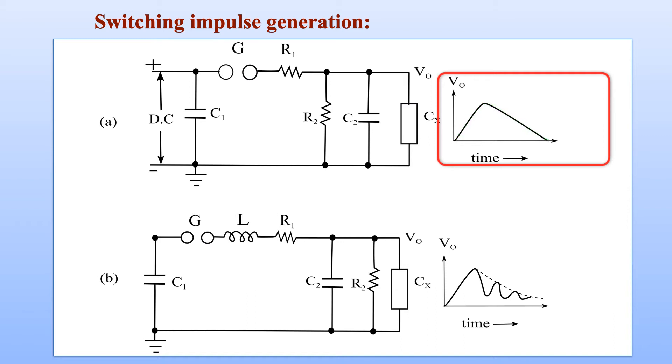Let us now focus on the lower circuit which consists of a series inductor L inserted just ahead of resistance R1. Many times we are interested in generating switching impulse voltages which are damped oscillatory in nature. In that case, a series inductor is added and the effect is visible in the highlighted region of the diagram. You can see that oscillations will be present in the output voltage. Although oscillations are present, this will still be unidirectional voltage.